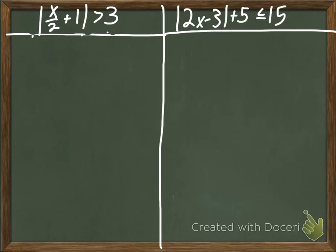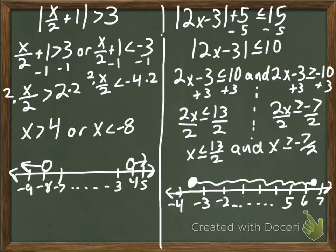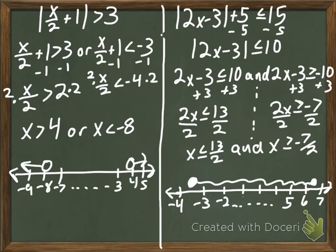So here are two problems that I want you to try in your group. Pay close attention to what inequality symbols are there, and make sure that you do the appropriate flipping and sign changing. Go ahead and pause the video and try them now. Here are the solutions to those two. Take note that on the right one, you had to do something before you could solve — you had to subtract 5. I hope that you recalled that. If you didn't, go ahead and take a look at everything. Pause the video and discuss with your group if you got something wrong.